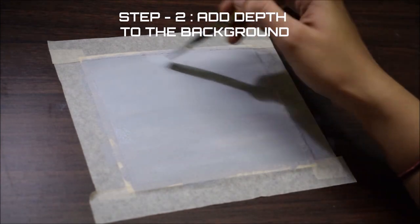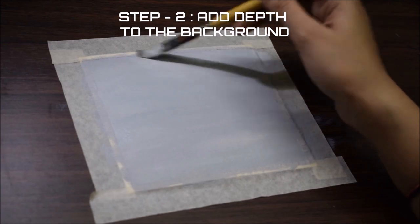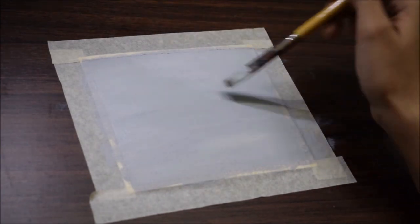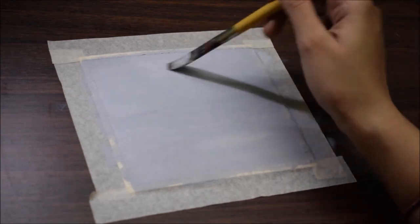Now the second step is adding depth to the background. Begin by adding lighter shade of gray to the top. That we will get by adding more white to the shade of gray which we have used to cover the background.